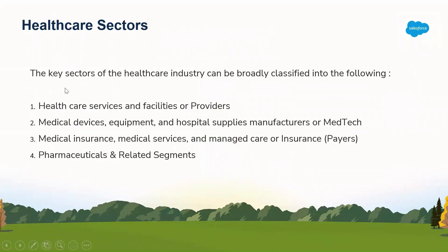The healthcare industry is divided into four major pillars or sub-industries. The first is healthcare services and facilities, also known as providers, because they provide the healthcare service — for example, hospitals. The second is medical devices, equipment, and manufacturers who supply equipment to hospitals, also known as MedTech. The third is medical insurance, medical service, and managed care, collectively known as payers, because they pay for the services a patient avails. The fourth is pharmaceuticals and related segments, associated with medicine and the research and development of different kinds of drugs.